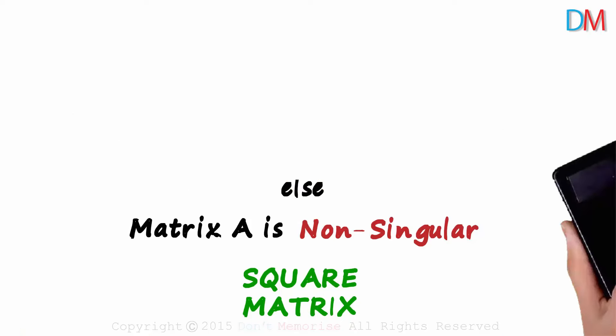We should try out a couple of examples now. Is this matrix A singular? To know if it's singular, we need to find its determinant. What is the determinant of A? It will be this product minus this product.